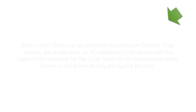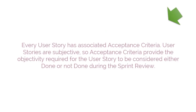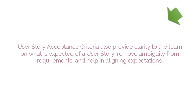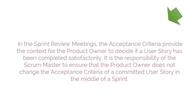User Story Acceptance Criteria. Every user story has associated acceptance criteria. User stories are subjective, so acceptance criteria provide the objectivity required for the user story to be considered either done or not done during the sprint review. User story acceptance criteria also provide clarity to the team on what is expected of a user story, remove ambiguity from requirements, and help in aligning expectations. In the sprint review meetings, the acceptance criteria provide the context for the product owner to decide if a user story has been completed satisfactorily. It is the responsibility of a scrum master to ensure that the product owner does not change the acceptance criteria of a committed user story in the middle of a sprint.